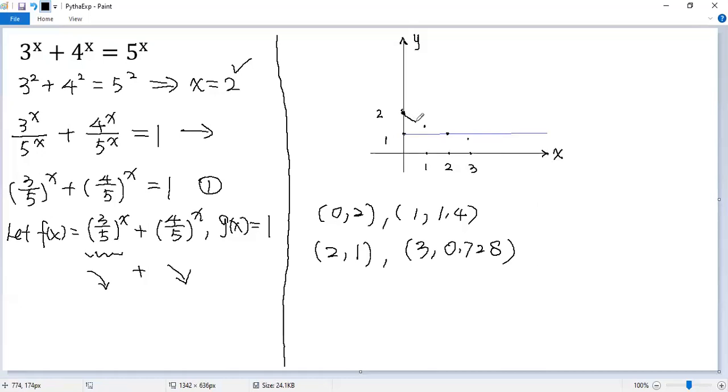So you can see the graph of function f(x) would look like this one. Not really accurate. So y equals f(x), and this horizontal line is y equals g(x).